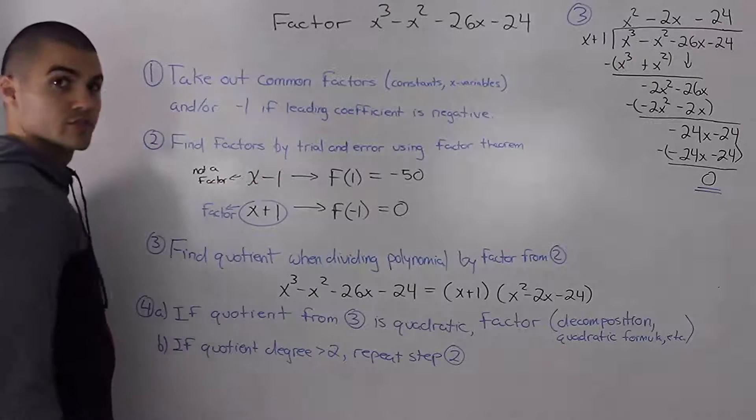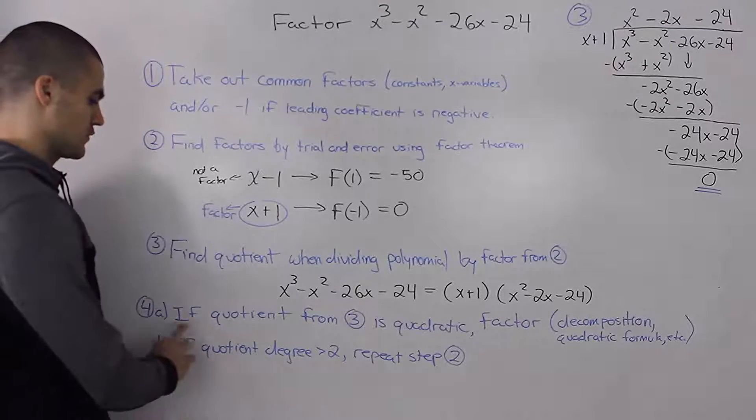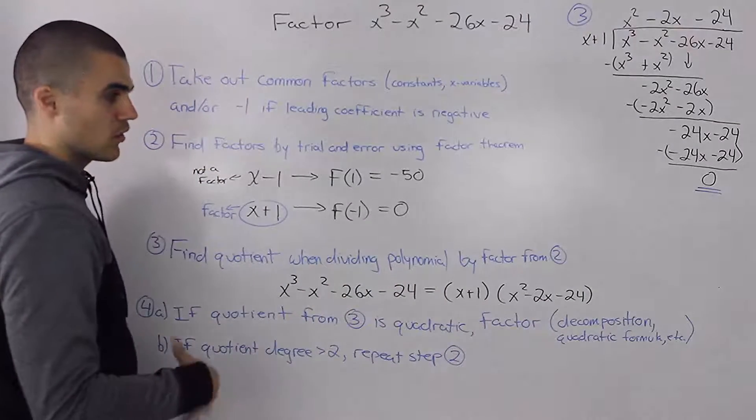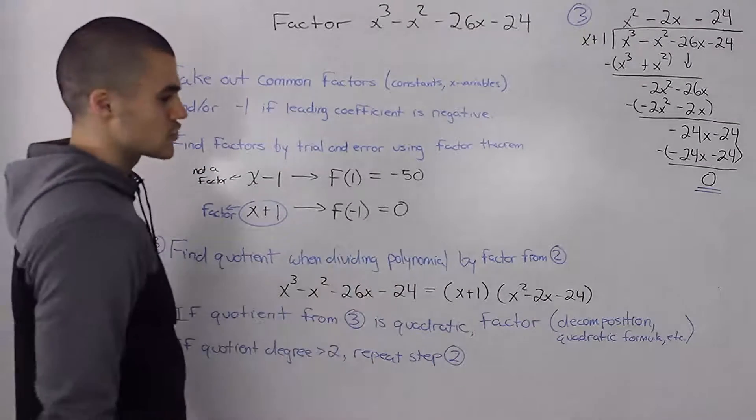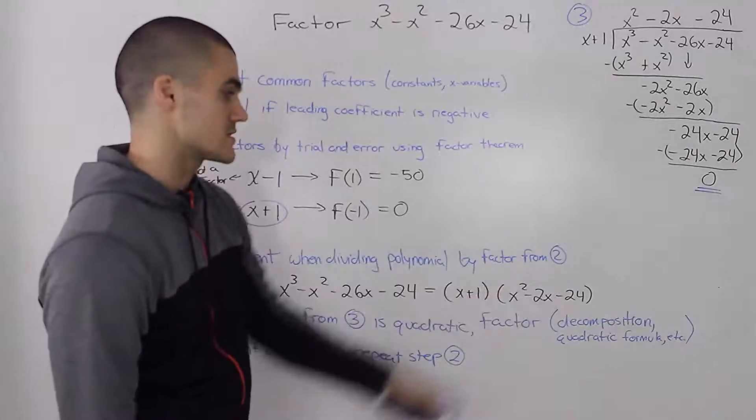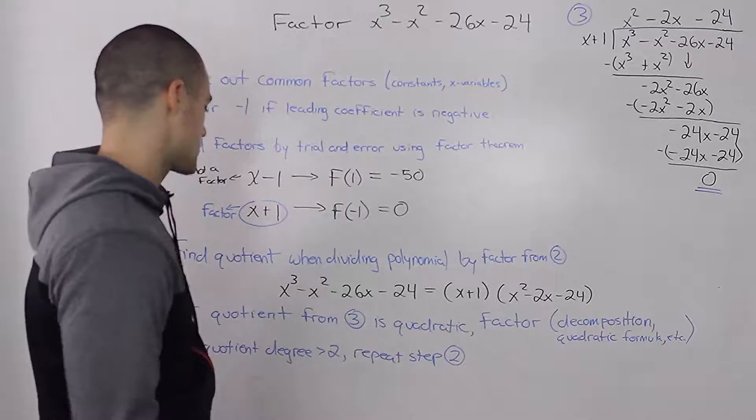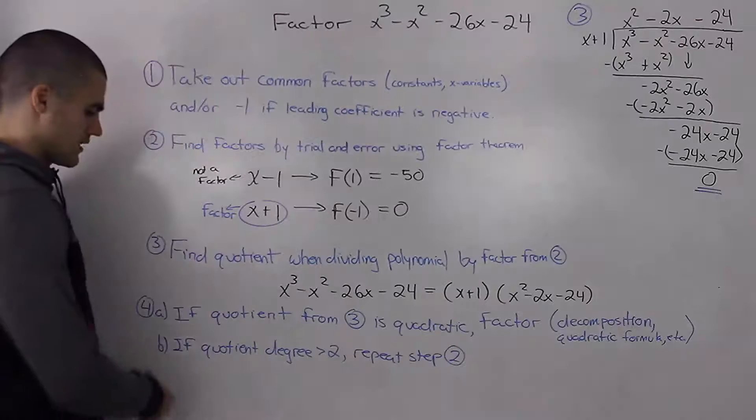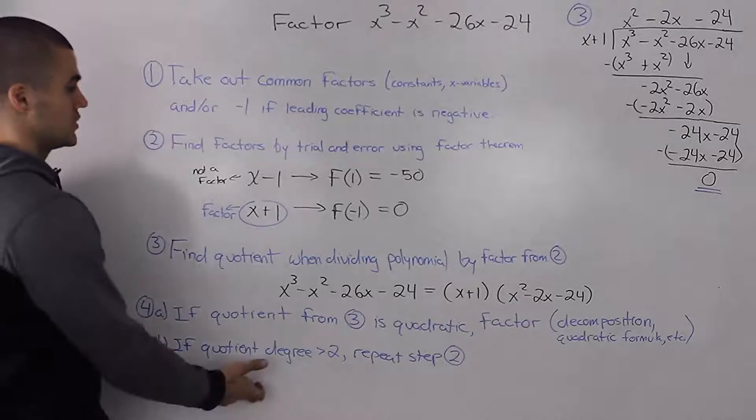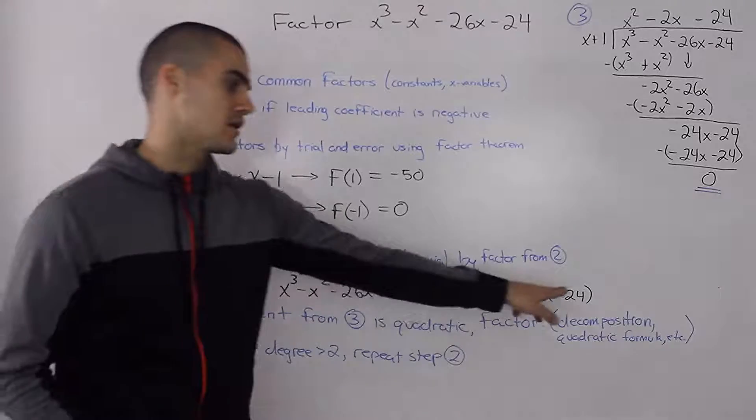Now we can move to step four and step four contains two cases. The first case is if the quotient that we got in step three is a quadratic, then we just factor the quadratic using decomposition or quadratic formula. Sometimes the quadratic won't be factorable but usually it is, so we can just factor it using techniques we already know. The second case is if the quotient has a degree that's greater than two, then we just go back to step two and repeat the process and factor that remaining quotient.